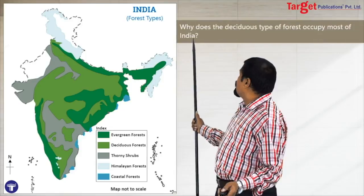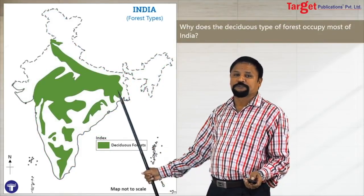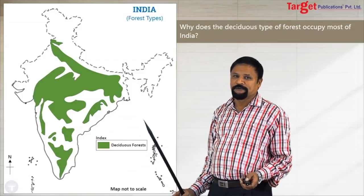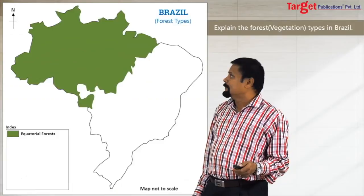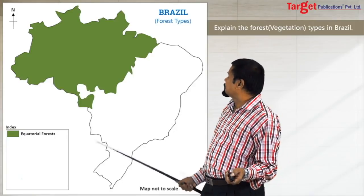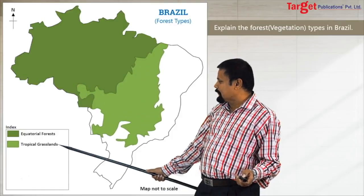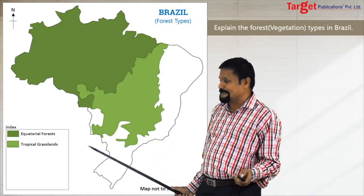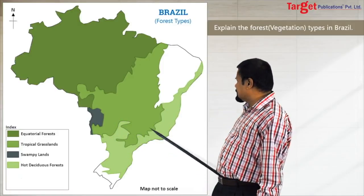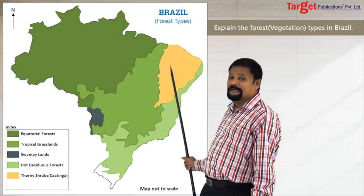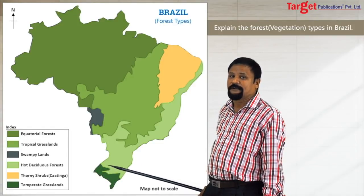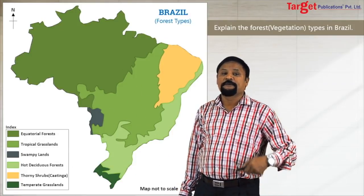Another question: why does the deciduous forest type occupy most of India? In that case, draw the stencil and show some patches of deciduous forest. The same way, for Brazil forests, mark all the forests: the Amazon equatorial forest, tropical grasslands called savannah, the swampy Pantanal region, hot deciduous forest, thorn shrubs called Caatinga, and temperate grasslands called Pampas. Any one of these may also come for the map-marking question.